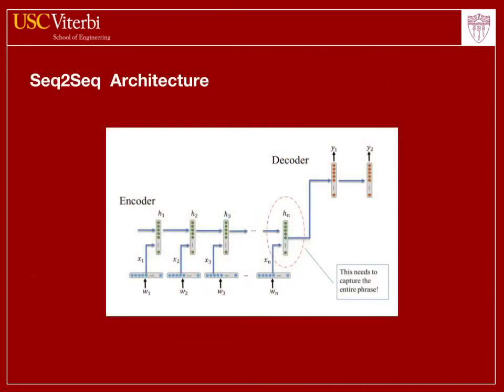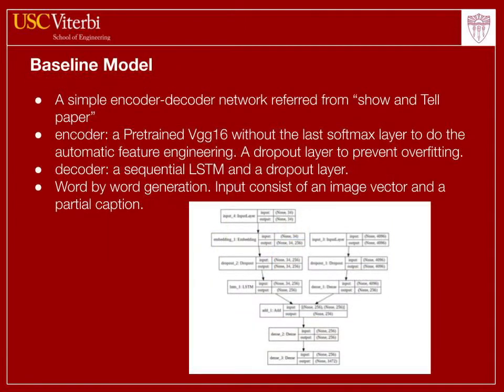Our model is based on the idea of encoder-decoder architecture, also known as sequence-to-sequence learning, which is shown below. The baseline model is a simple encoder-decoder network referred to from the show-and-tell paper. To represent the image, the encoder is a pre-trained VGG-16 network without the last softmax layer to do automatic feature engineering. We also add a dropout layer to prevent overfitting. For the generation of words, the decoder is a sequential LSTM, and we also add a dropout layer to prevent overfitting.